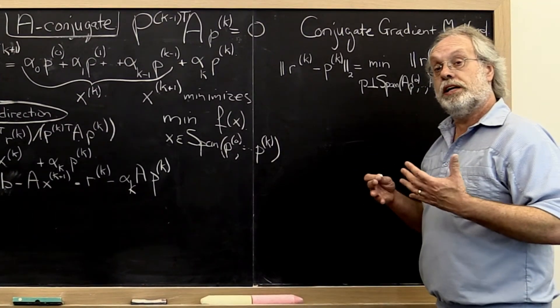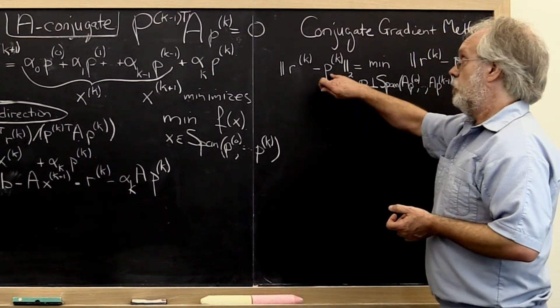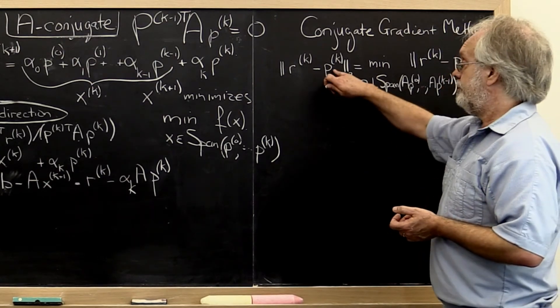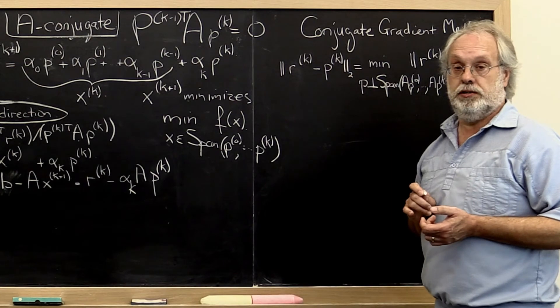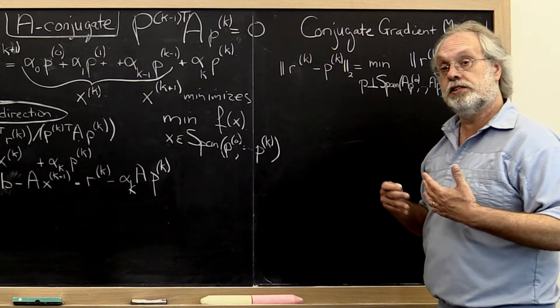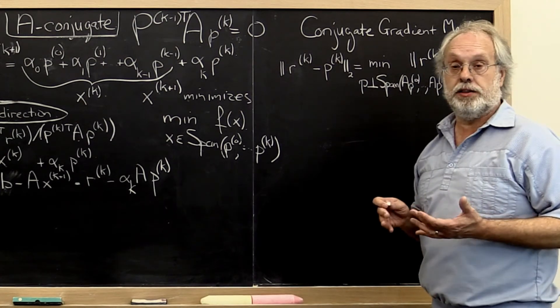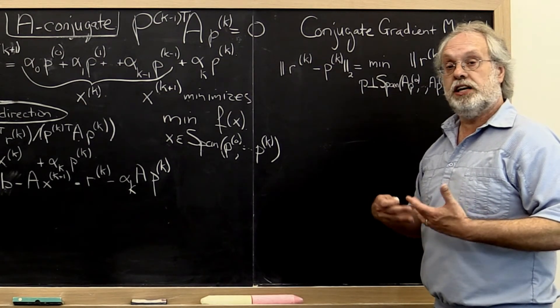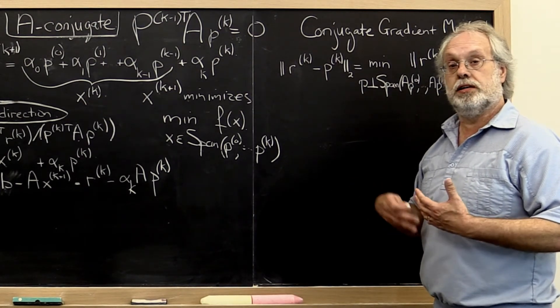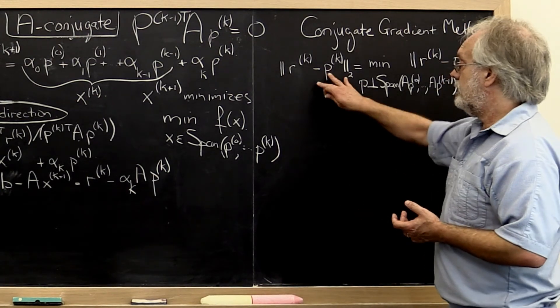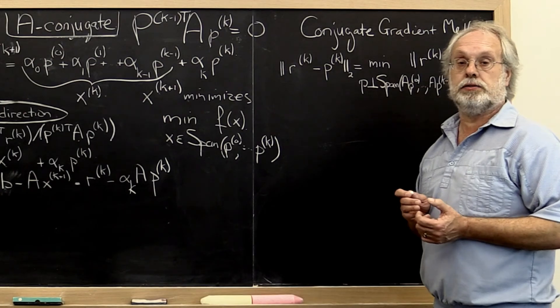So notice that with this we have characterized what we want from our direction, but we haven't figured out how to actually compute it. So we're a step closer towards what's known as the conjugate gradient method, but we haven't yet made it practical. And that's what the next few units are going to be about - how to now take this and make it into a very practical algorithm.